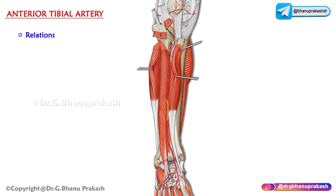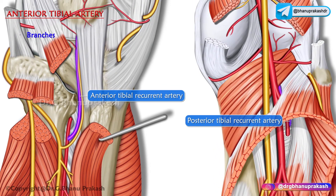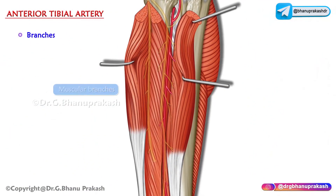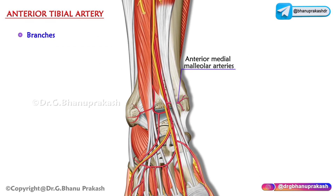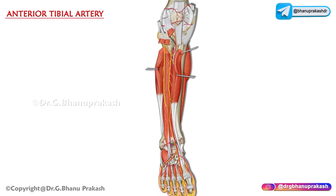The branches of the anterior tibial artery include: the anterior and posterior tibial recurrent arteries, which take part in arterial anastomosis around the knee joint; muscular branches, which give blood supply to the adjacent muscles; and the anterior medial and anterior lateral malleolar arteries, which take part in anastomosis around the ankle joint.